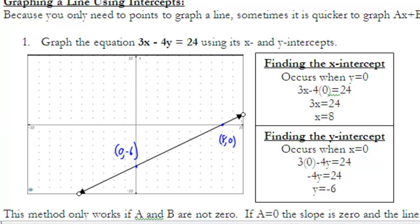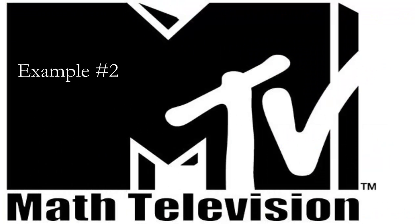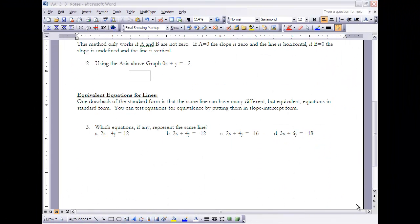I can then just draw in my line going through those two points, and this would represent the graph of 3x minus 4y equals 24. The method that I just worked on in example number 1, finding the x and y intercepts only works if A and B are not 0.